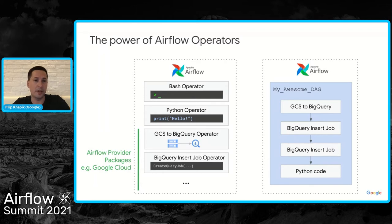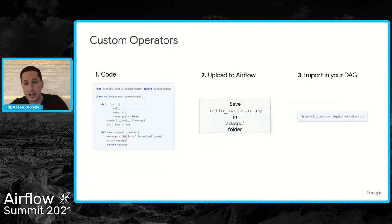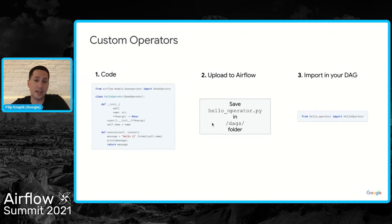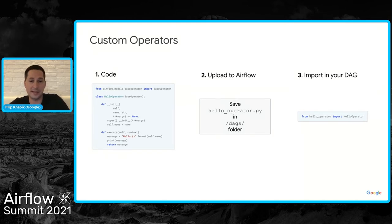Always check whether there is an existing operator first. If not, that's where Airflow's extensibility comes in — writing a new operator and extending the available integrations is actually pretty simple. You can start with the base operator and extend its capabilities to whatever you need, place it in the DAGs folder for Composer to load it, and call it from any other DAG in the same environment. You don't have to extend the base operator — you can also extend more advanced operators, like MySQL, to add extra capabilities.